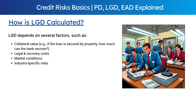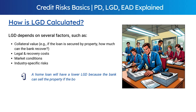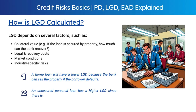Regarding collateral value — if a loan is secured by a property, the question is how much can the bank recover from it. For example, a home loan will have a lower LGD because the bank can sell the property if the borrower defaults, whereas an unsecured loan has a higher LGD since there is no collateral.